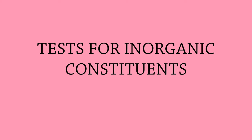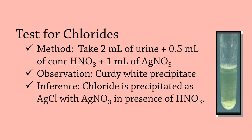Test for chlorides: In the test for chlorides, chloride is precipitated as its silver salt with silver nitrate in the presence of nitric acid. To do this, take 2 ml of urine and add 0.5 ml of concentrated nitric acid and a few drops to 1 ml of silver nitrate. Note the formation of a curdy or cloudy white precipitate in the form of silver chloride.